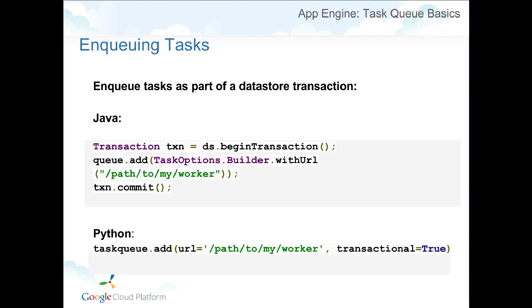Another nice feature of task queue is that you can schedule tasks as part of a data store transaction. For example, if you want to add something to the data store and then trigger a process to update an average — perhaps you have a plus-one button and want to count clicks — you would increment that count in a separate task. But you only want to schedule that task if the data store transaction was successful. This is how you would do it as part of a transaction.